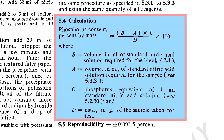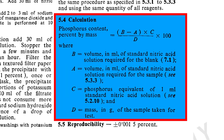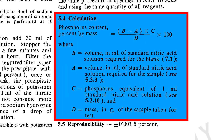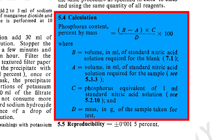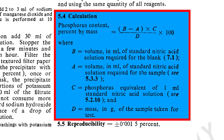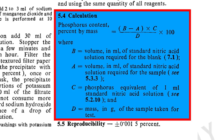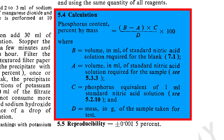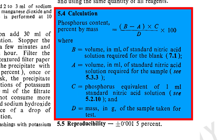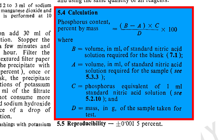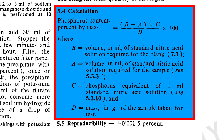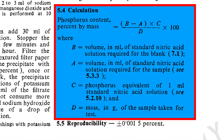To calculate the phosphorus percentage, start by subtracting the sample titre volume from the blank titre volume. Then divide the resulting value by the weight of the sample taken for analysis. Finally, multiply this result by the factor of the nitric acid used during titration. This method provides a precise determination of the phosphorus content in the sample.